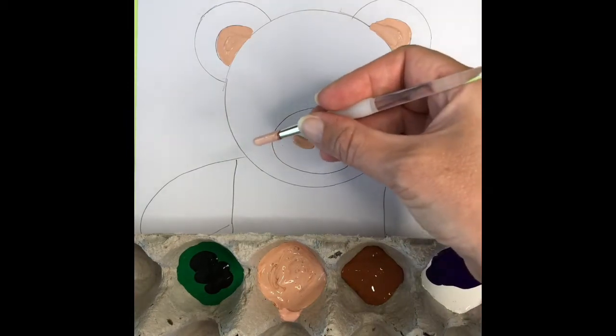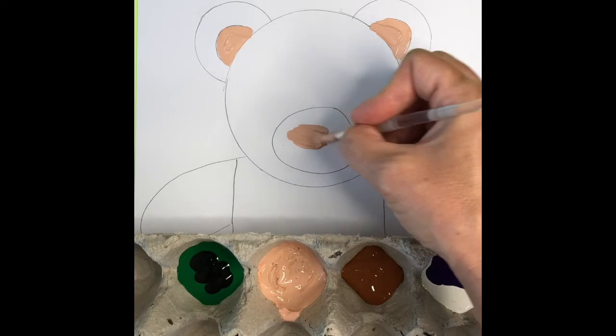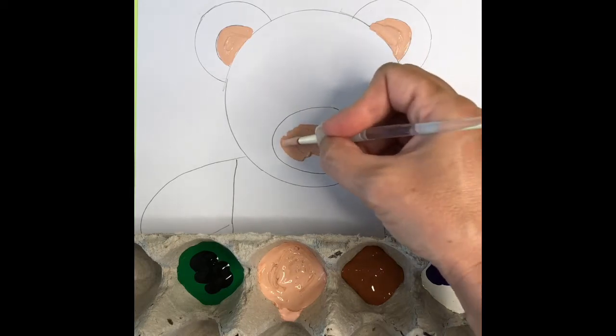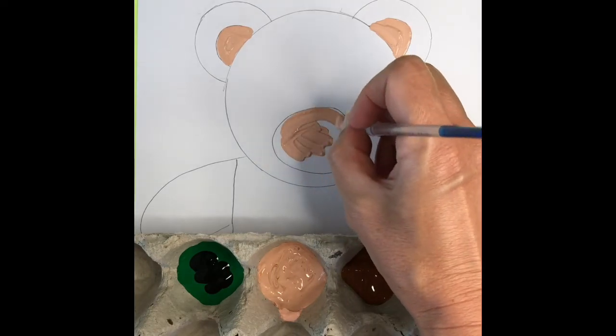And we're going to paint his cute little nose the same color. Can you see how I'm holding onto my paintbrush just like you hold onto your pencil? Nice and low so you can control it. Stay inside the lines that you drew so you have the shape of that circle for the nose.